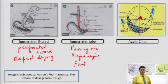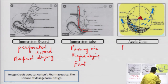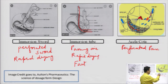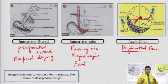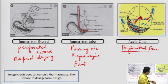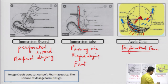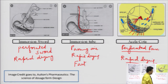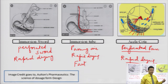Next modification is the Acella Cota. This contains a perforated pan — the pan itself is perforated (jali numa hai). Air comes inside, dries the tablets, and exits through the perforations. This also results in a rapid drying process. Acella Cota is a brand name for this type of perforated coating pan.